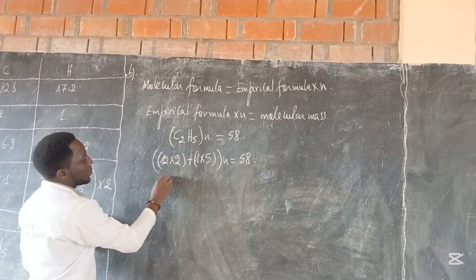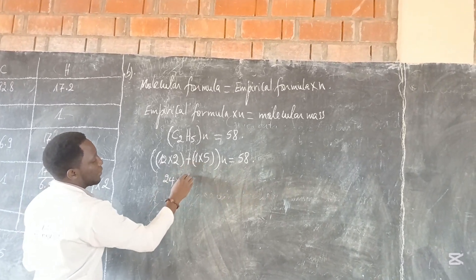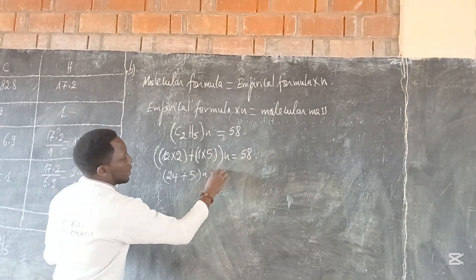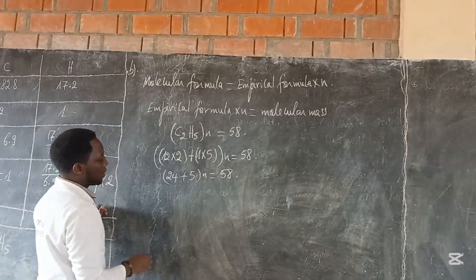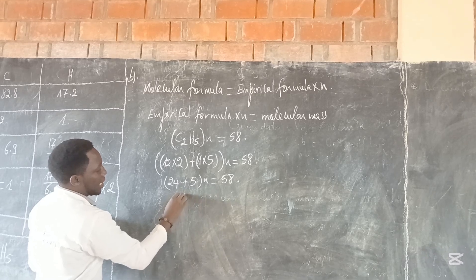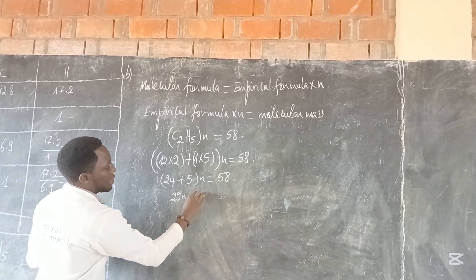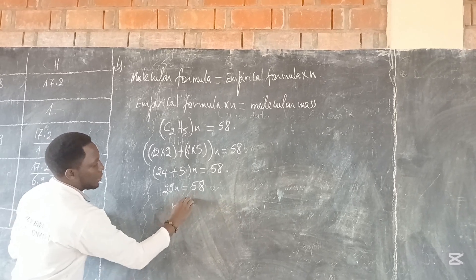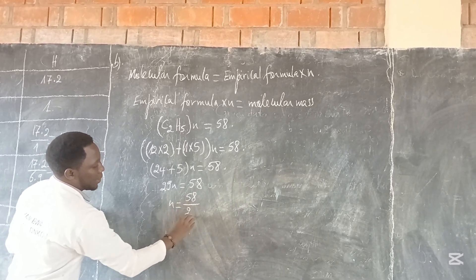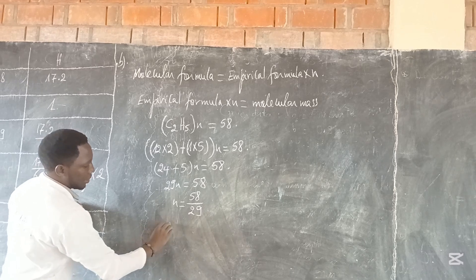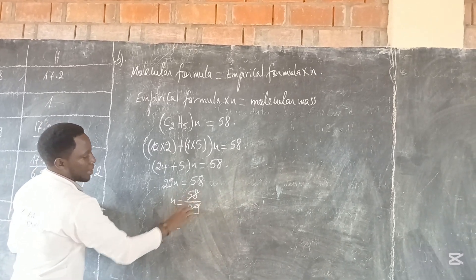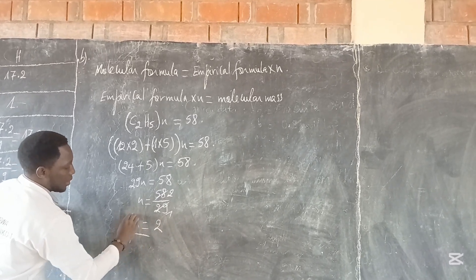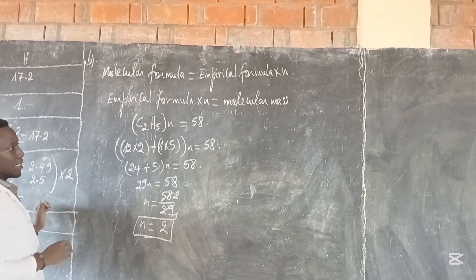12 times 2 equals 24. 1 times 5 equals 5. Remember, we multiply by N. This is equal to 58. So 24 plus 5 equals 29, and 29N equals 58. The value of N equals 58 divided by 29. The answer is N equals 2.